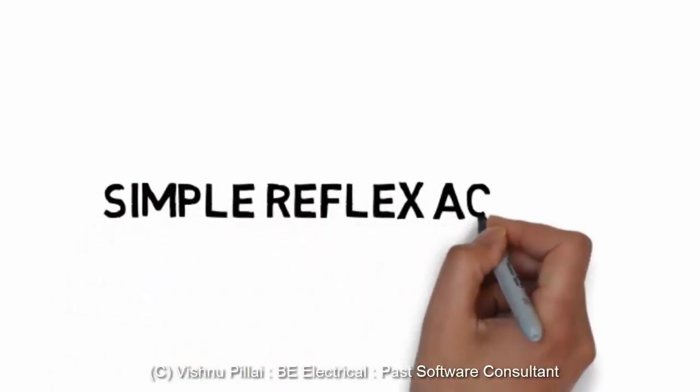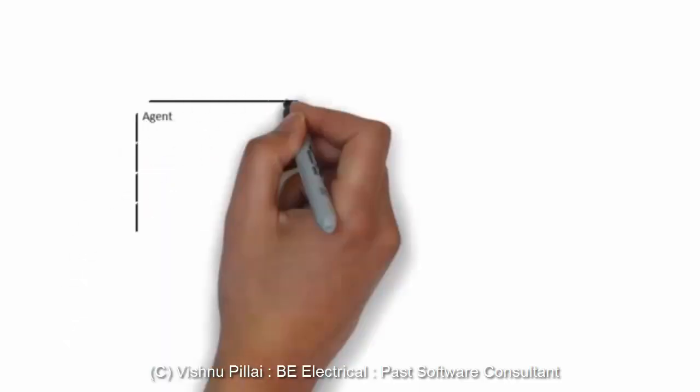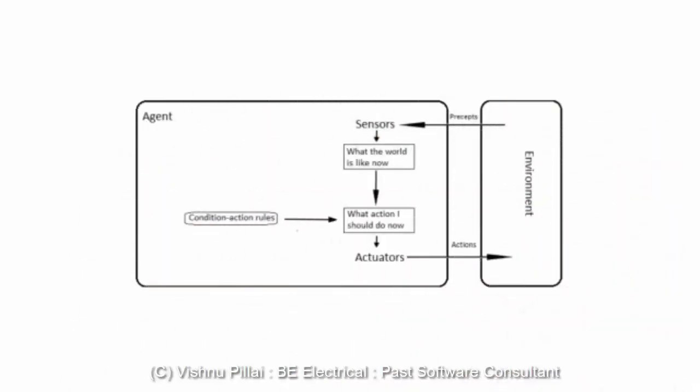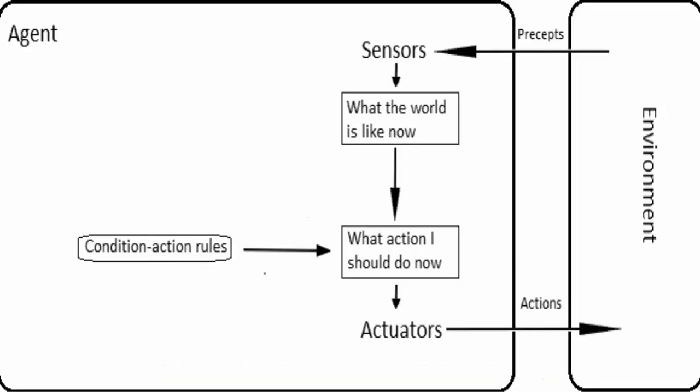Next we'll look into simple reflex agents. Simple reflex agents are one of the basic and simplest agents. If you look at the construction of an agent, it will include an environment, and a sensor will help to get information from the environment. The actuator will allow the agent to act in the environment. An example of a simple reflex agent could be a vacuum cleaner.